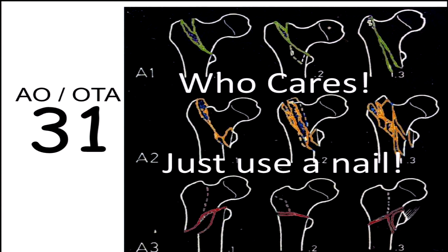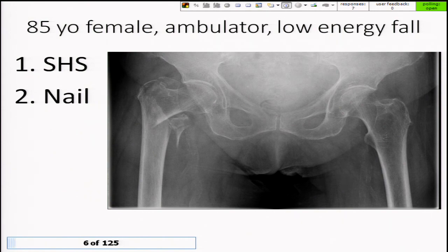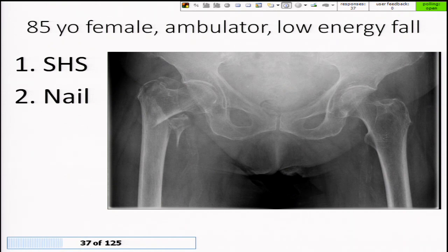Very efficient. I guess you just figured there's really not much to talk about — that's just the answer. Dr. Harding gave an excellent argument as well. So, pick one for sliding hip screw, two for nail. Base it off the minimal information you have here, and then we'll show the results.